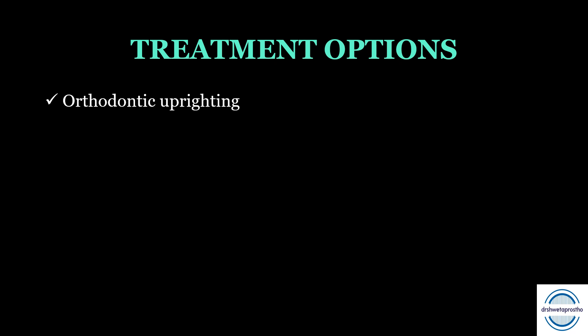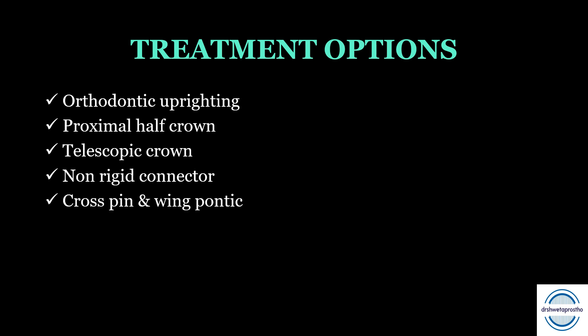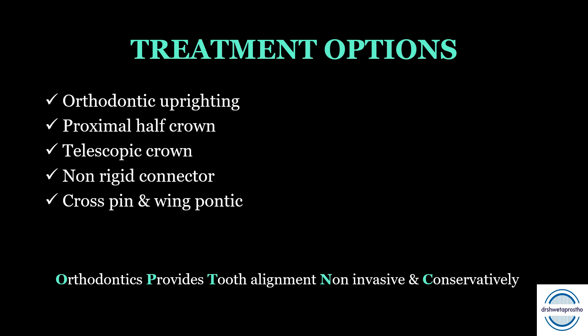We have five treatment options for managing tilted molar abutments. The first is orthodontic uprighting — the most recommended, most biologically conservative method; in MCQs, this is the answer for most recommended method. Second, proximal half crown. Third, telescopic crown. Fourth, non-rigid connectors. Fifth, cross pin and wing pointing. You can remember these by the mnemonic: 'Orthodontics Provides Tooth alignment Non-invasively and Conservatively' — O for orthodontic uprighting, P for proximal half crown, T for telescopic crown, N for non-rigid connector, and C for cross pin and wing pointing.